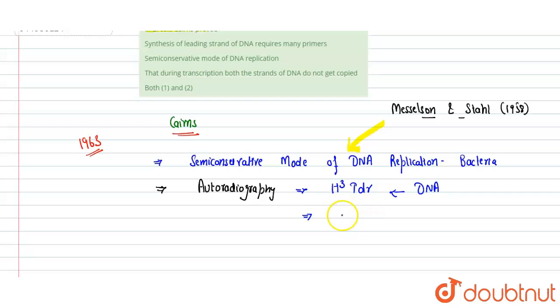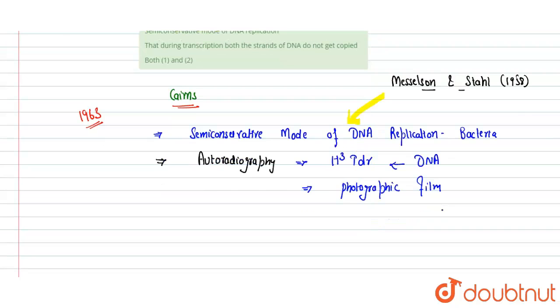Then it showed, based on that, the semi-conservative mode of DNA replication. As per the semi-conservative mode of DNA replication, there were - as per according to the semi-conservative mode, from a parent strand, here I am showing that it is hypothetically DNA, it is a parent strand.